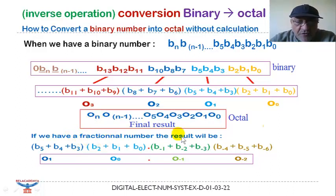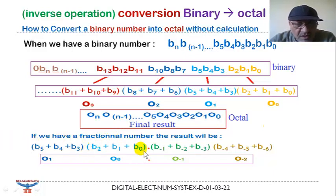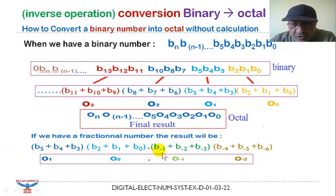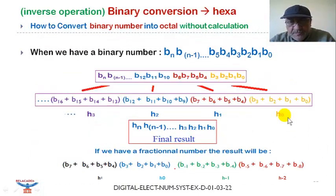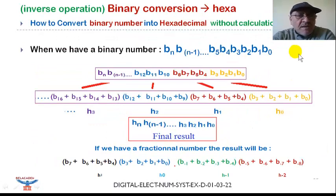In the case of a fractional number, we do the same: we make the sum of three bits and the sum of the next three bits, and so on. For the integer part we start from the least significant weight going to the left, and for the fractional part we start from the binary point going to the right. We obtain for example a result like 1100.0-1 0-2 in octal.